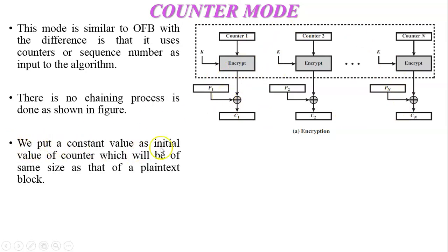We put a constant value as initial value of counter which will be of same size as that of a plaintext block. Now see this is the counter one. This is the 64-bit counter one. Now plaintext size is also 64 bits and it generates ciphertext of 64 bits.